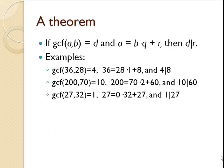Here's a theorem. If the greatest common factor of two integers is d, and a equals b times q plus r, then d, the greatest common factor, divides the remainder. Here are a few examples. With 36 and 28, the greatest common factor is 4, the remainder is 8, and 4 divides 8.